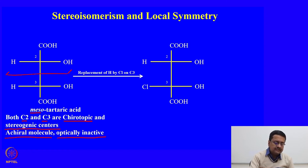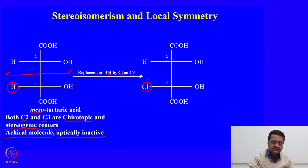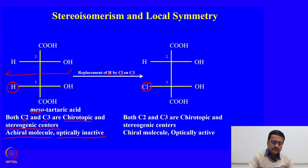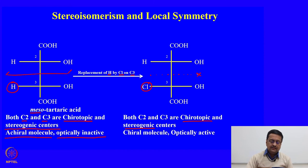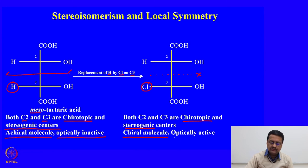Now, we replace the hydrogen by chlorine on C3. After this replacement, both C2 and C3 remain chirotopic and stereogenic, but the mirror plane which was present before is now absent. Therefore this molecule is converted to a chiral molecule and is optically active.